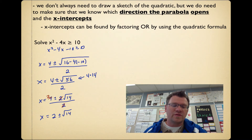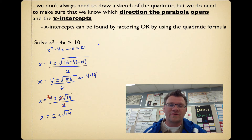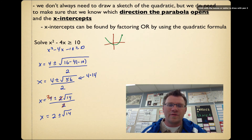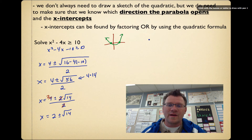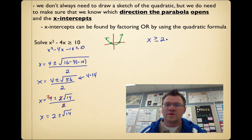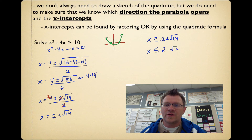These are your two x-intercepts: 2 plus root 14 and 2 minus root 14. They're in exact form with roots, but we can still use them to answer our question. Since this parabola opens up (positive x squared) and we're looking for where it's greater than 0, a quick sketch shows the parabola is positive to the right and to the left of the two x-intercepts. So the answer is x is greater than or equal to 2 plus root 14, and x is less than or equal to 2 minus root 14.